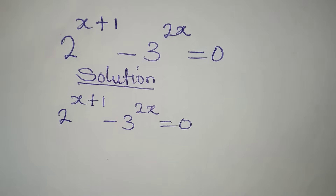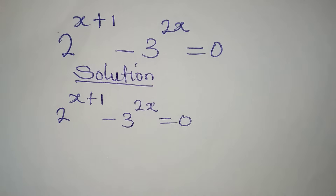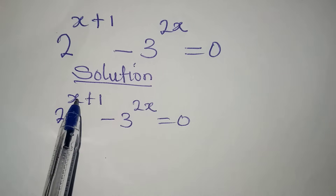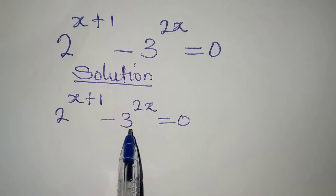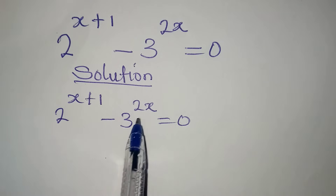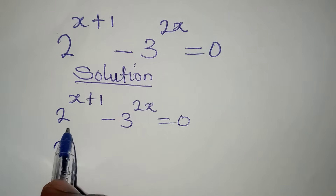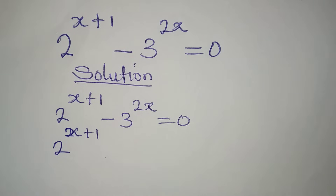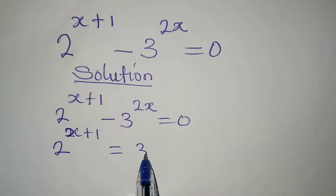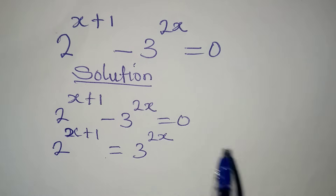What I'm trying to do is make sure I have x in one place. Before that, I will take minus 3 to the power of 2x to the other side, so that I will have 2 to the power of x plus 1 equal to 3 to the power of 2x.